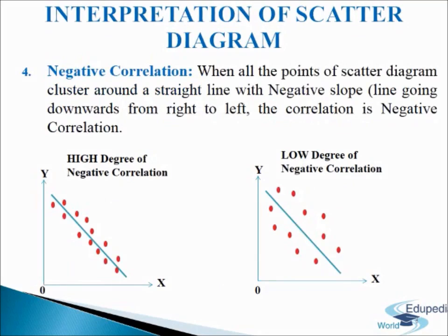Now we come to negative correlation. If plotted points slope downward from left to right (negative slope) and all the points cluster near the regression line, it refers to a high degree of negative correlation, where r is between −0.75 and −1. If the plotted points slope downwards and are very much scattered around the regression line, it refers to a low degree of negative correlation, where r is between 0 and −0.25.